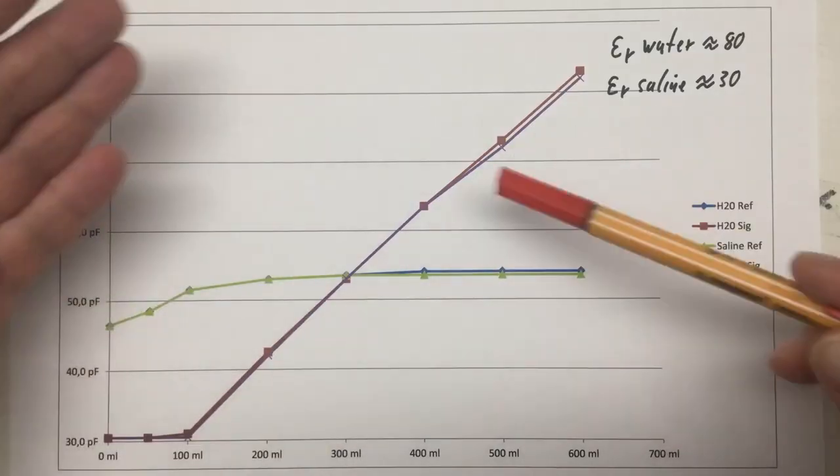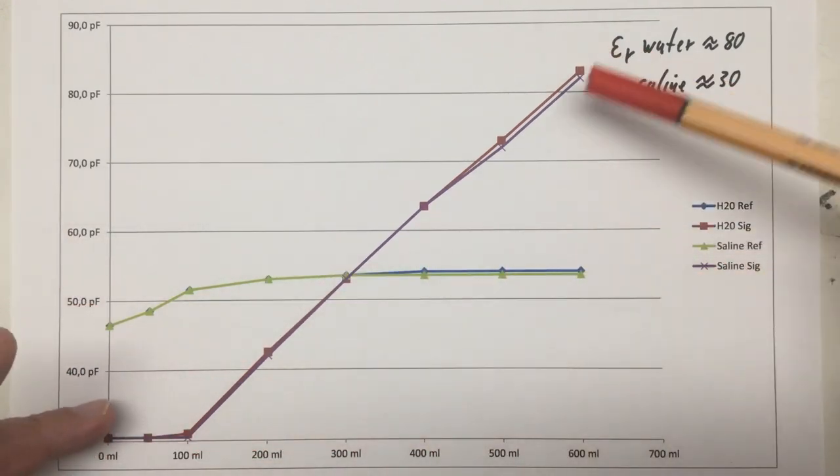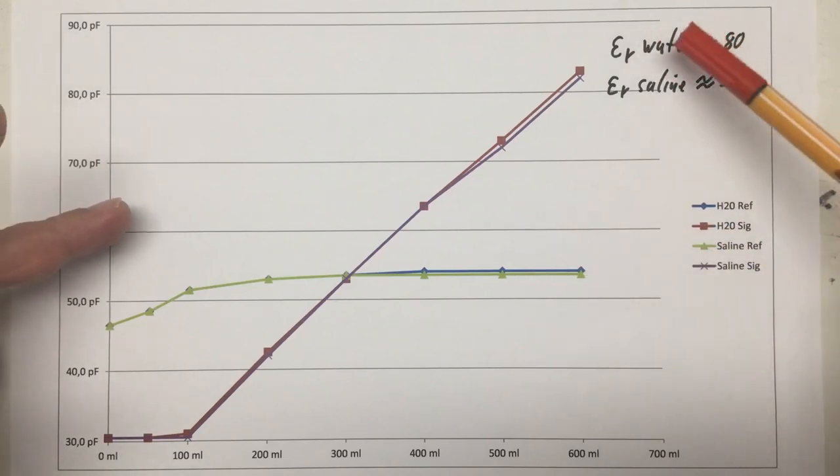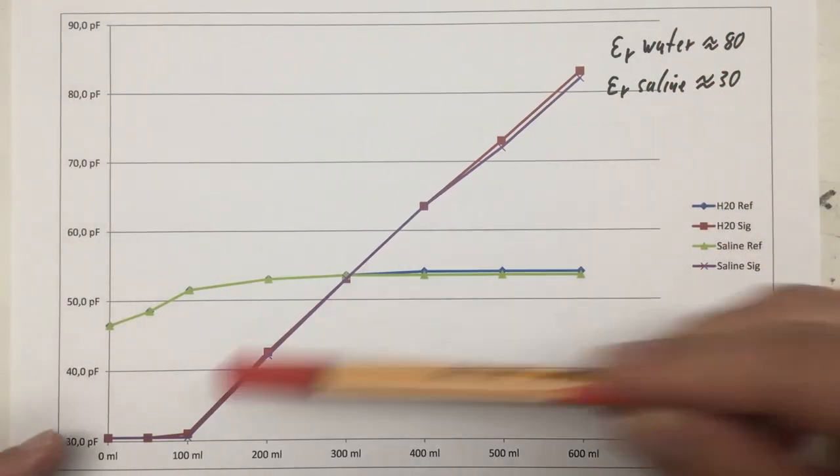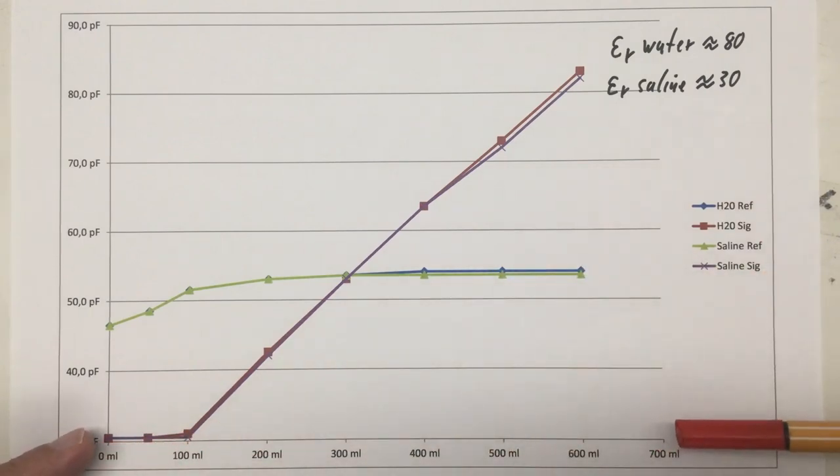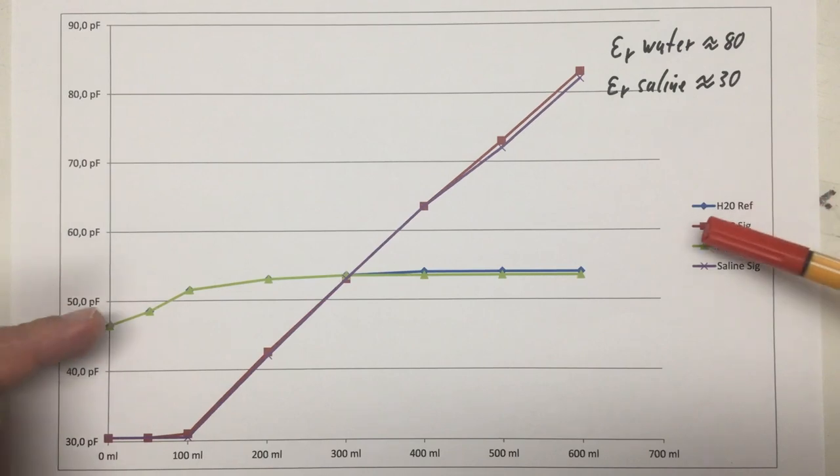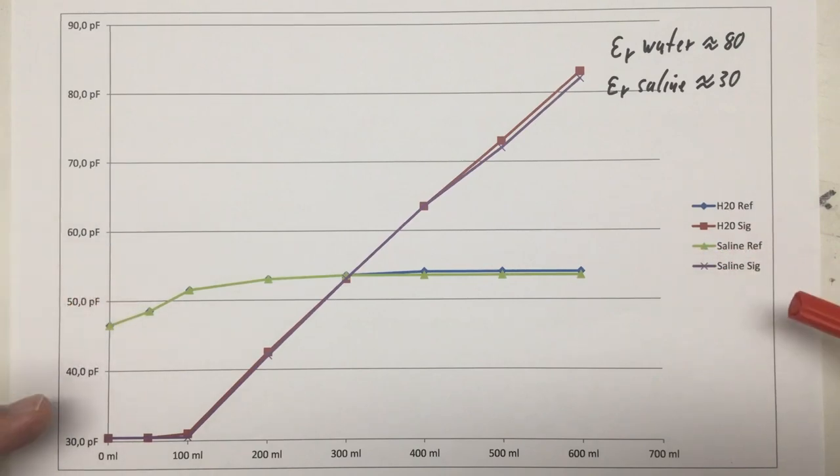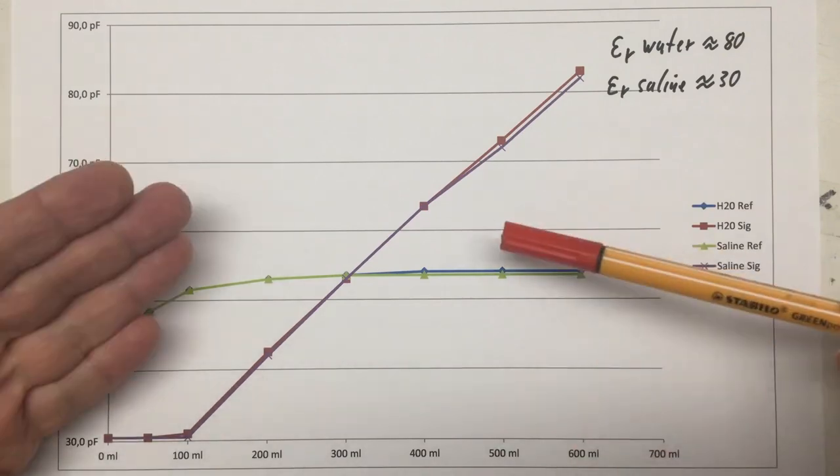Here's the oddity I was talking about. We have the capacitance readings for our experiments with water versus saline. Capacitance here, fill level of the container here. Blue is water reference, red is water signal, green is saline reference, and lilac is saline signal. You see they are practically identical.